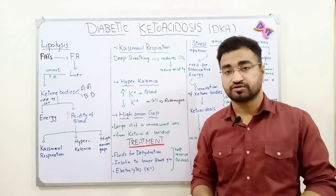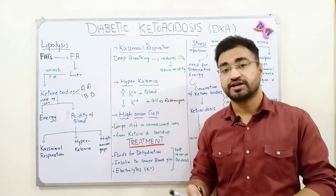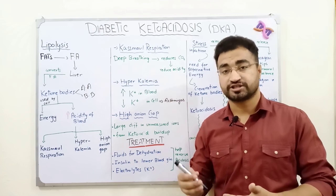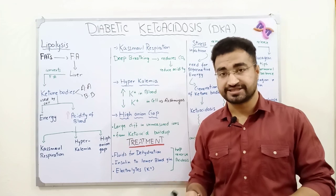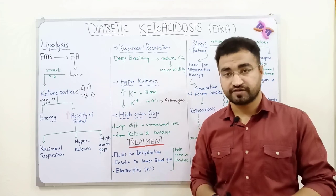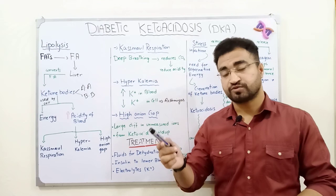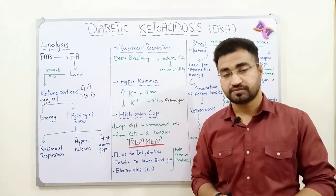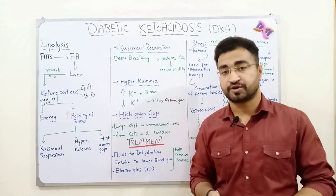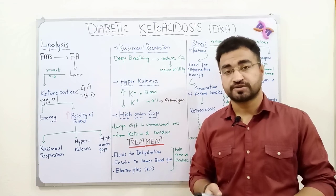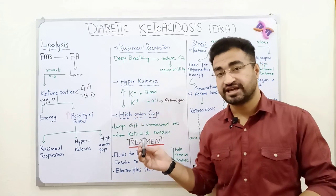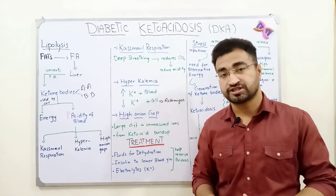Additionally, in diabetic conditions, insulin is not produced. One of insulin's functions is to lower blood glucose, but another important function is to stimulate the sodium-potassium ATPase transporter. This pump normally brings potassium into the cell and moves sodium out. When insulin is absent, the sodium-potassium ATPase does not work properly, meaning potassium cannot enter the cells and remains elevated in the bloodstream.